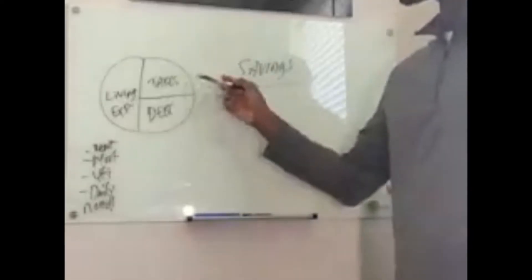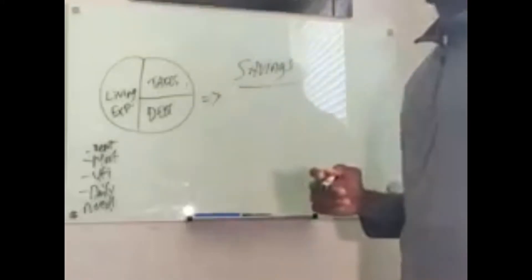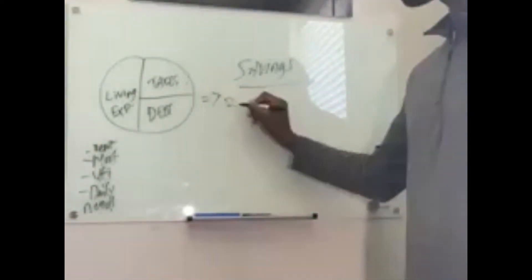Now that we have our tax reduced and our debt diminished, let's focus on savings. What type of savings? Retirement.